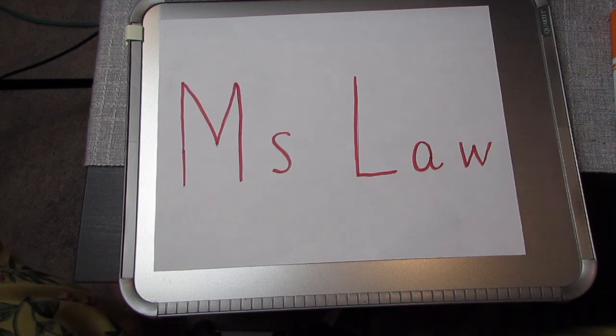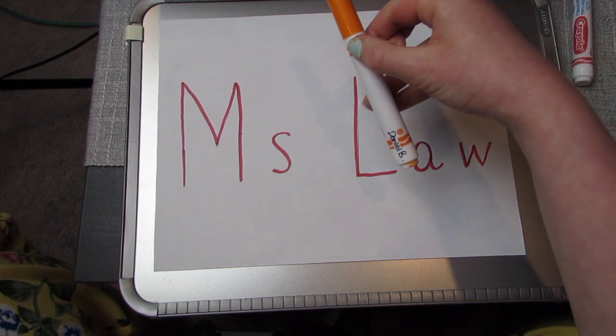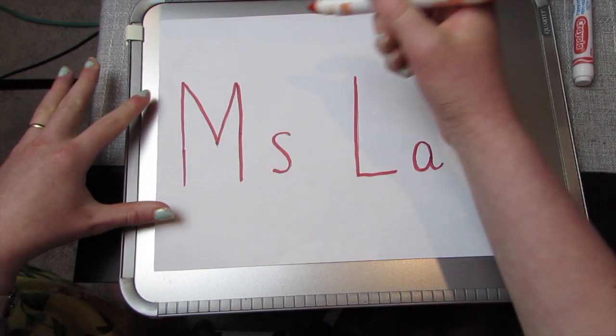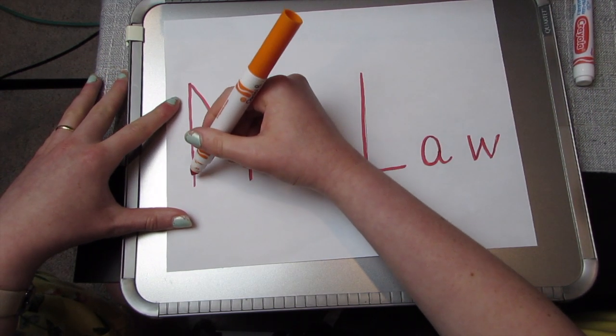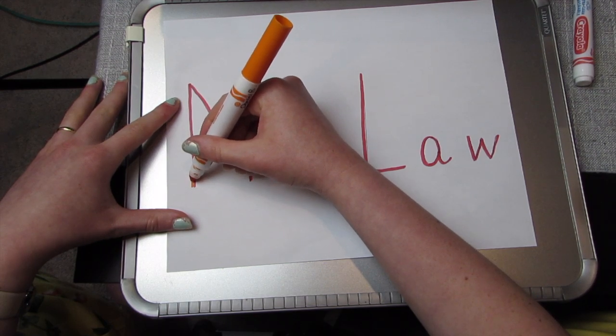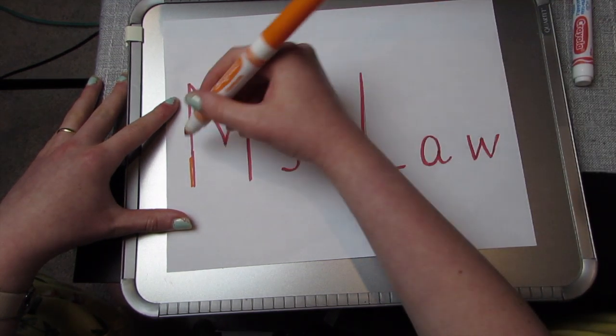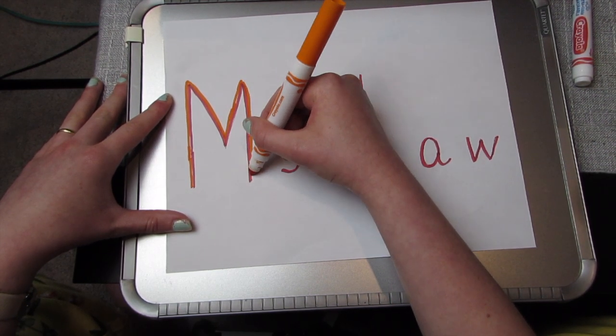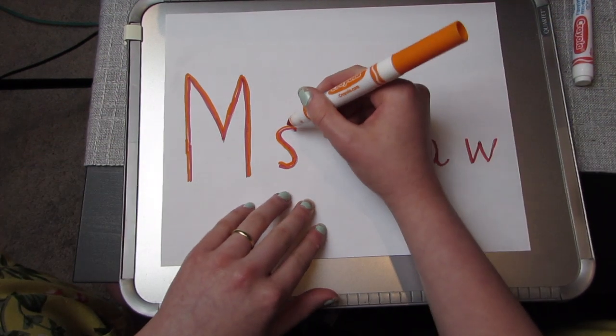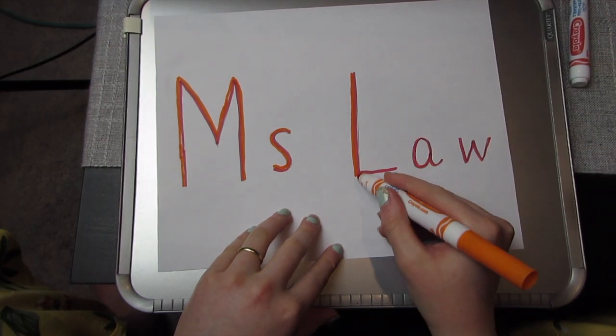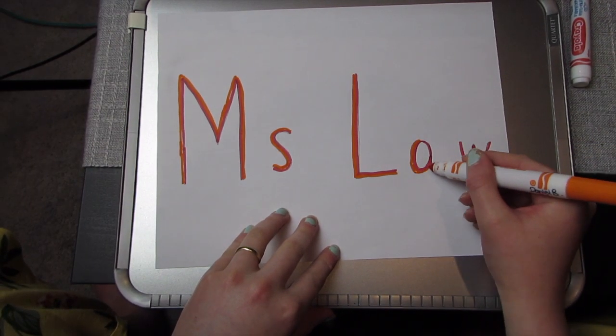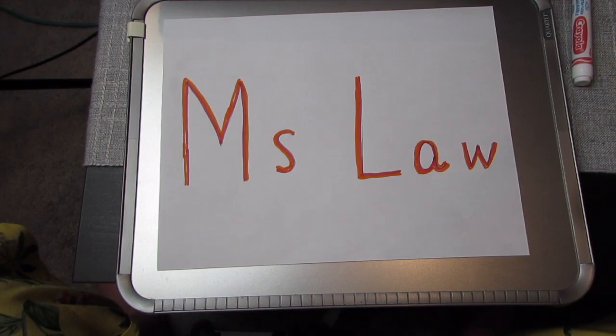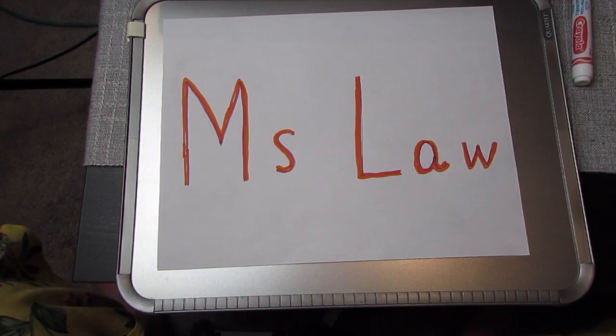The next step is to do our orange. So again, I'm going to go over each letter, but this time I want to make sure that I'm not going over the red. I want to have it to be this side. Just like that. Alright, and there is my orange.